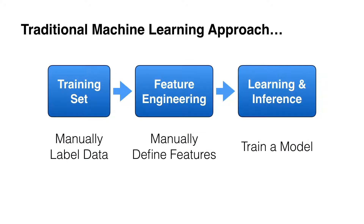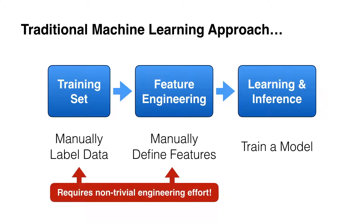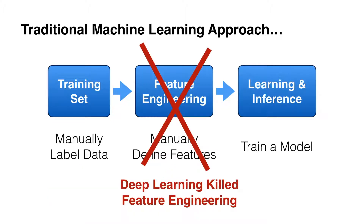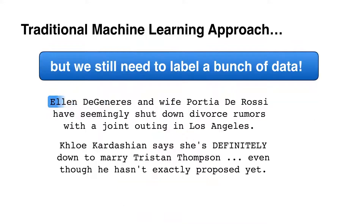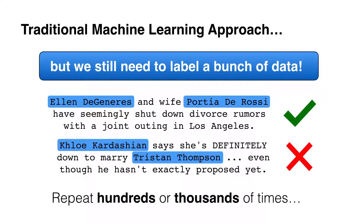If you were to approach this in the traditional machine learning way, you'd begin by manually labeling a bunch of data, then tediously designing features to train a model, which would be the final step to build your classifier. As noted in the introductory talk, these first two steps require non-trivial engineering effort. One of the big appeals of deep learning is that it's killed manual feature engineering, but that benefit comes with a substantial cost — in order to get rid of feature engineering, we need a huge amount of labeled data, requiring humans to generate training data hundreds or thousands of times.